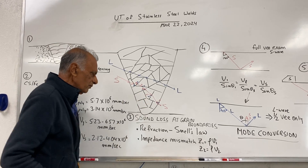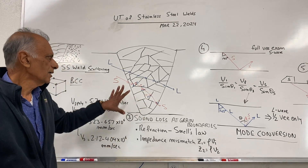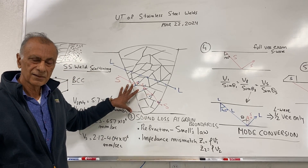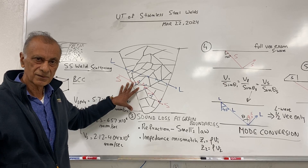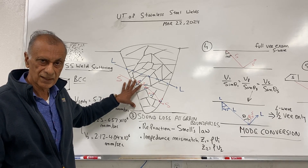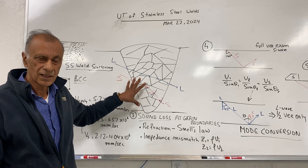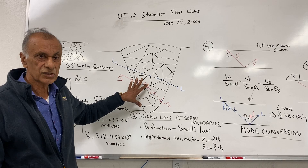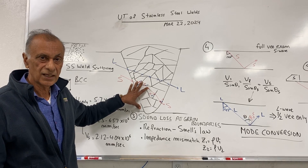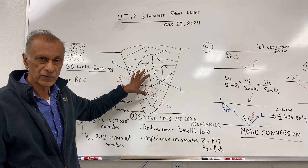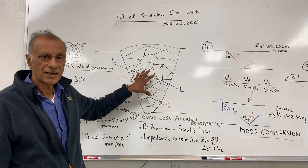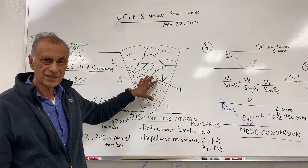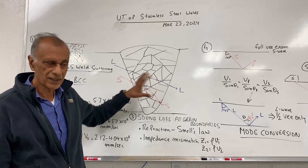From this we can see very clearly what kind of wave should be used for stainless steel weld inspection. The shear wave will be ineffective, so we really have to use the L-wave to inspect these stainless steel welds.